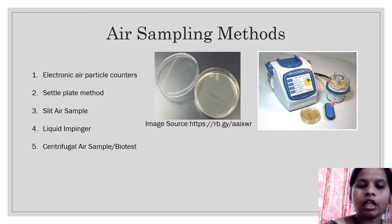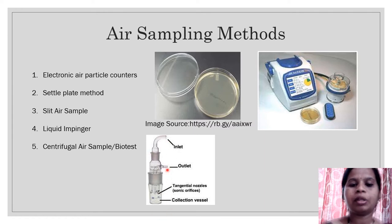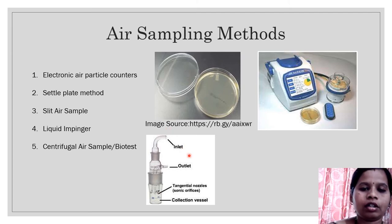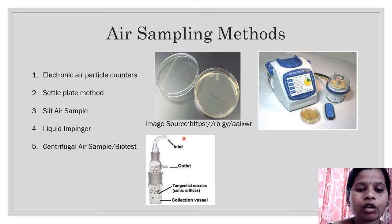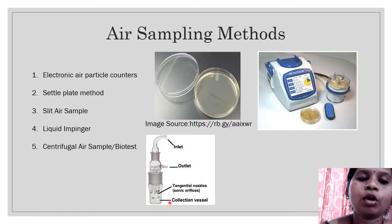The next method is the liquid impinger. This instrument allows the air sample to enter through an inlet, and a large volume of nutrient broth is present inside. The microorganisms are held in this nutrient broth, which is then incubated and the number of microorganisms inside are counted.